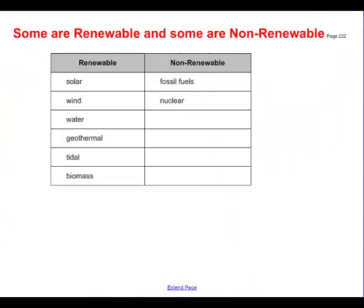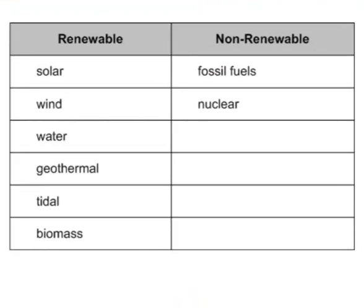We can also look at energy sources in terms of renewable and non-renewable. Renewable energy represents a form of energy that can be used again and again — it replenishes itself. Whereas non-renewable energy is not: once you've used up that energy source, you're not going to get any more. There's a limited supply.